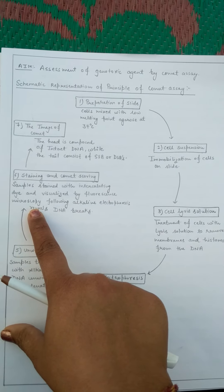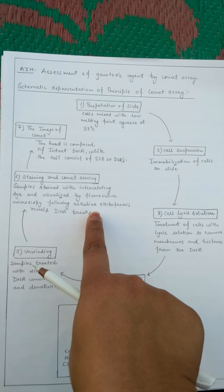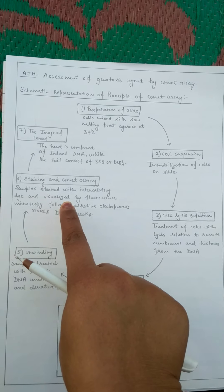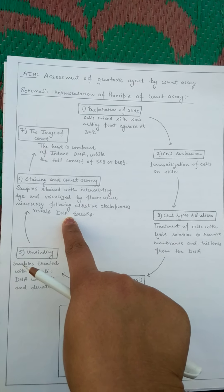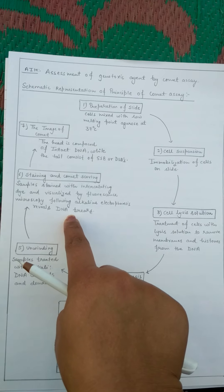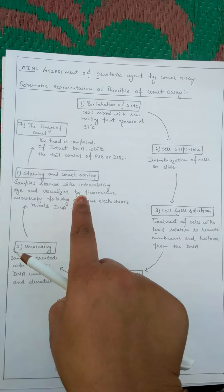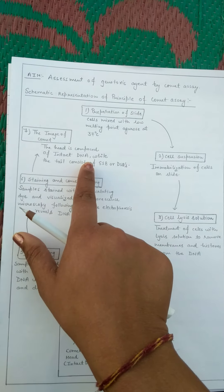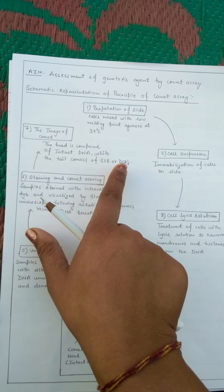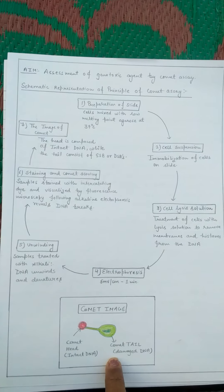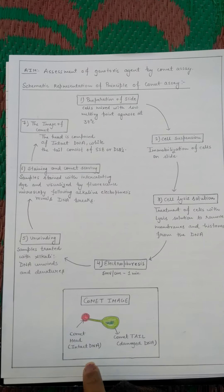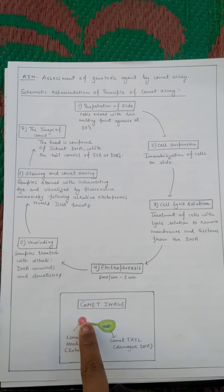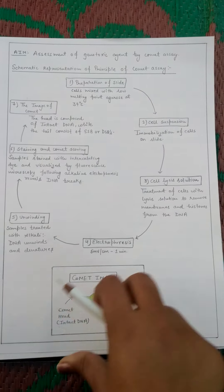After unwinding and denaturation, staining and comet scoring are performed. Samples are stained with an intercalating dye and visualized by fluorescence microscopy. Following alkaline electrophoresis, this reveals the DNA breaks we want to detect — whether any DNA break is present in the nucleus. The head is composed of intact DNA while the tail consists of single strand breaks or double strand breaks.